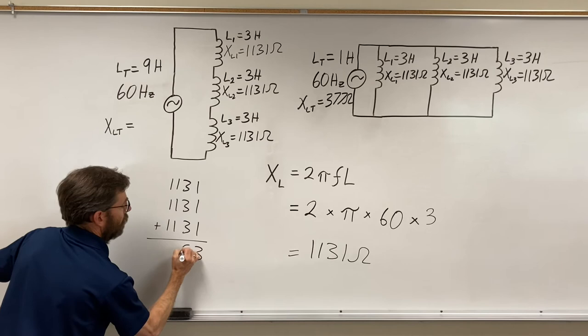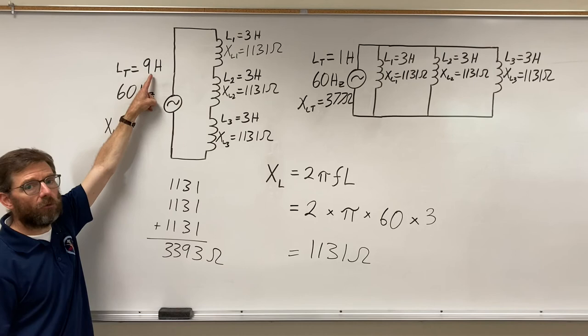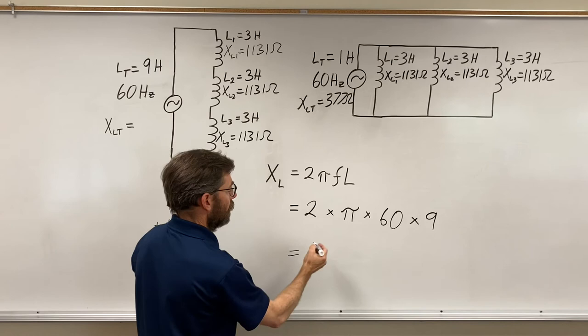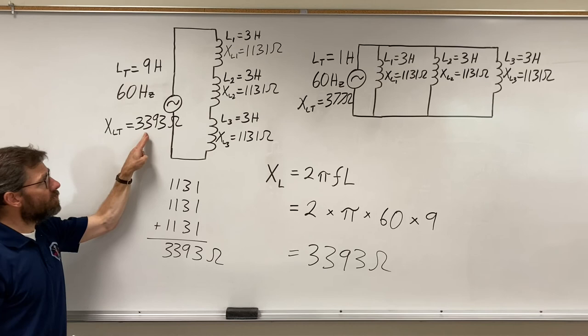3393 ohms. Before I write it up here let's check that formula. Let's check that formula with nine Henry's. If we say there are nine Henry's of total inductance in the circuit, can I simply multiply by nine in this formula? And sure enough, punch that in your calculator. 3393 ohms.